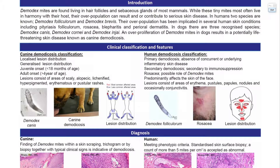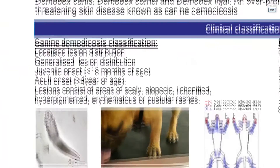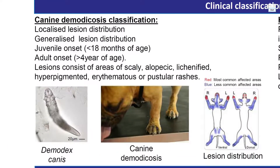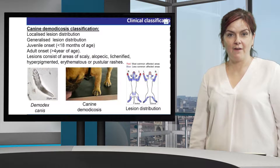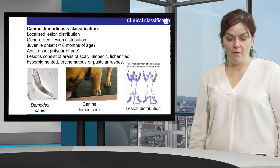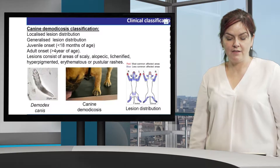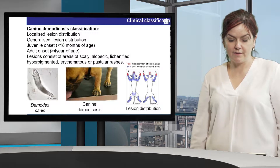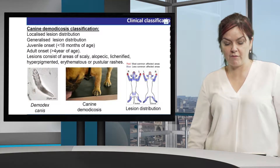With the clinical classification and features of canine demodexosis: it is classified into two main groups, localised and generalised. Localised refers to lesions found in one to five locations, and generalised where more than five locations are affected, with the paws most commonly and severely affected. It can be juvenile or adult in onset, with juvenile being less than 18 months of age and adult onset greater than four years. Lesions grossly appear as areas of scaly alopecia, lichenified, hyperpigmented, and erythematous or pustular rashes.